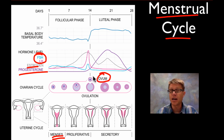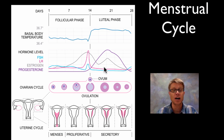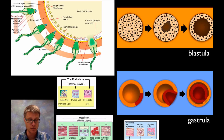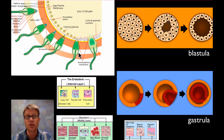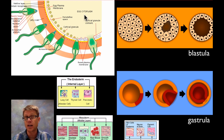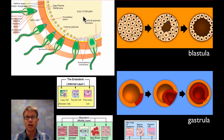That ovum or egg is moving its way down the oviduct and may or may not be fertilized by a sperm. Here is that ovum floating down the oviduct. Basically a sperm just has genetic material plus enzymes in the front of it, and once one fertilizes the egg no others can. It releases its genetic material into the egg, and now we've gone from two gametes — a sperm and an egg — to a fertilized cell.